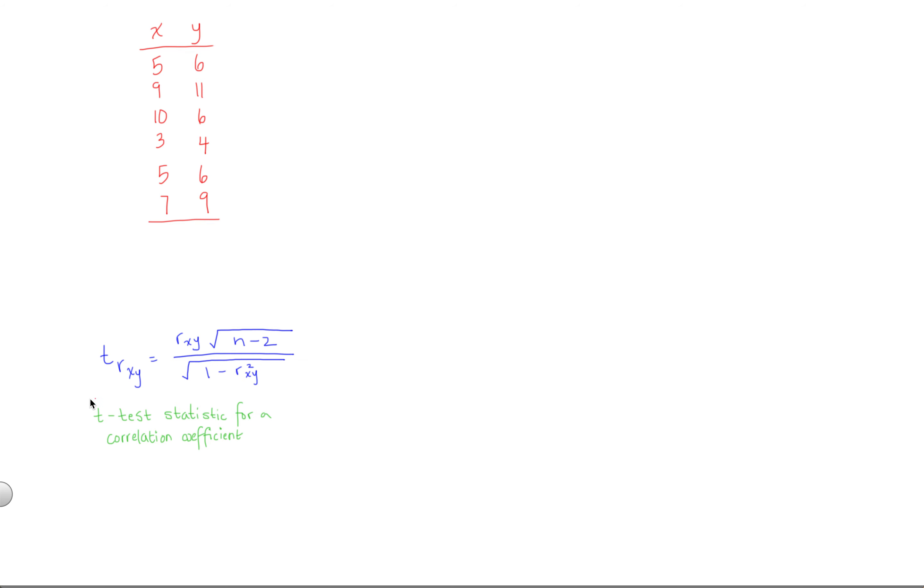In this video, we're going to go over an example of how to calculate the t-test statistic for a correlation coefficient. Essentially, we're going to see how we can take an observed correlation, which describes the relationship between two variables in a sample, and see if we believe that a correlation actually exists in the population.